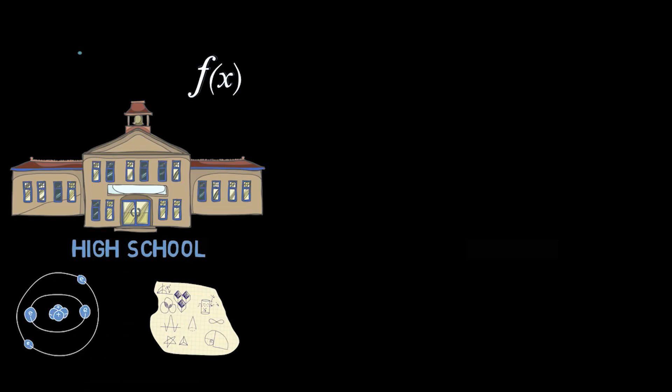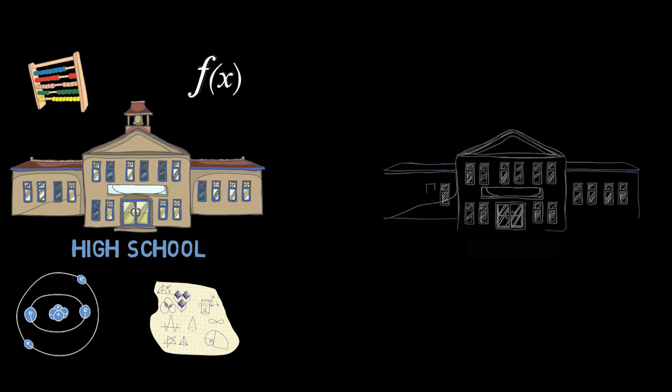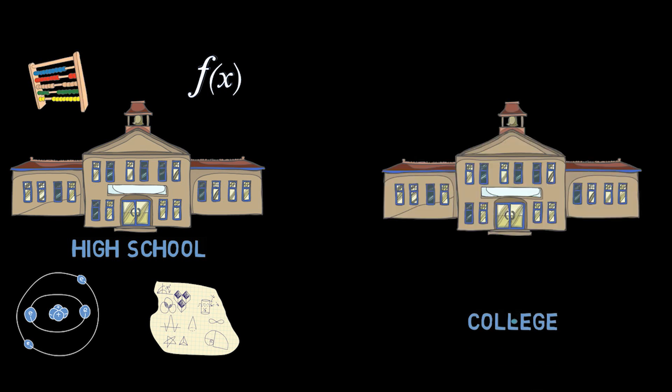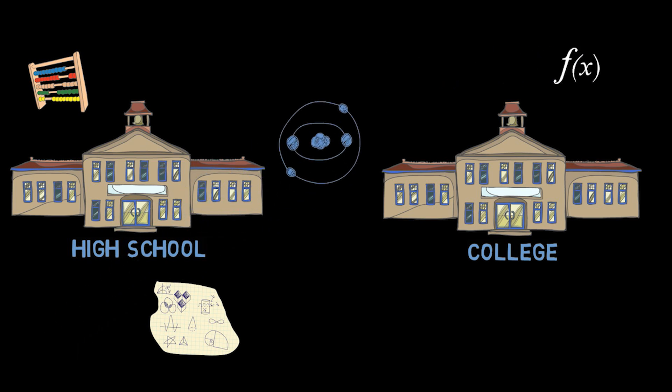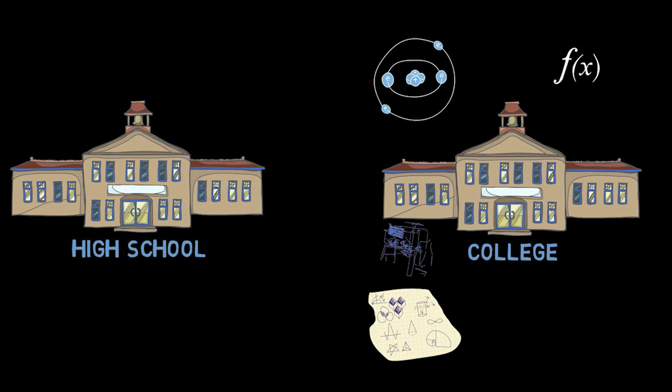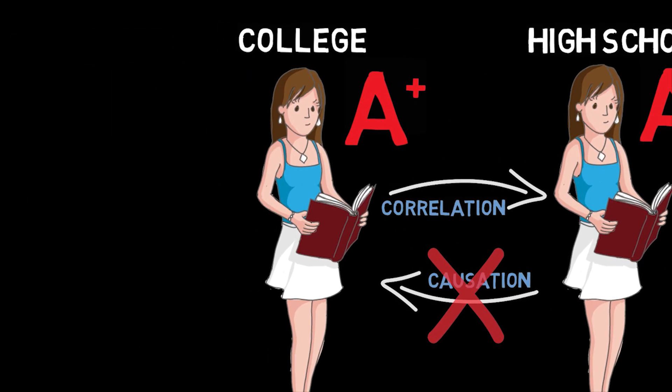Nonetheless, earning high grades in high school may sometimes cause a person to earn high grades in college. For example, Jane may have gotten good grades during high school, and some of those grades transferred to her college, which causes her success in college. Here, success in high school for Jane causes her success in college. But most of the time, it is not the success in high school that causes success in college. It is usually someone's working hard in college courses that causes that person to succeed in college.